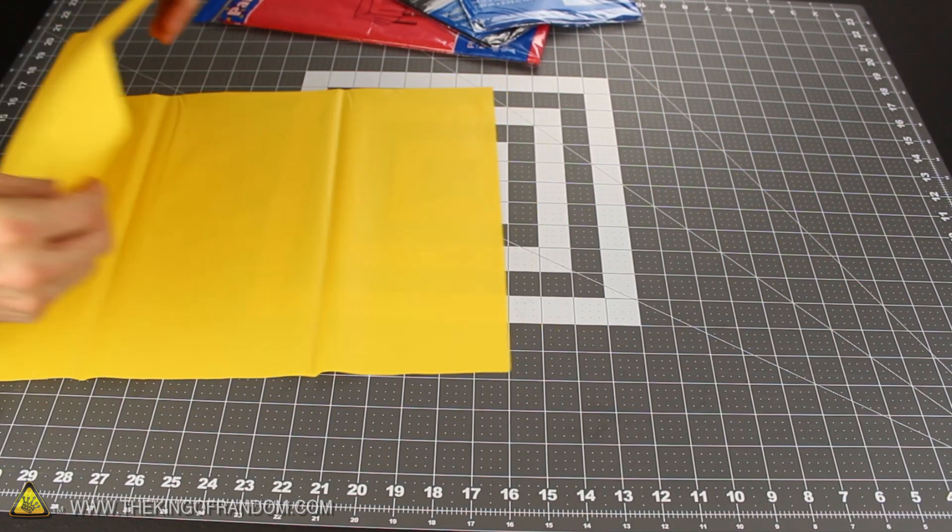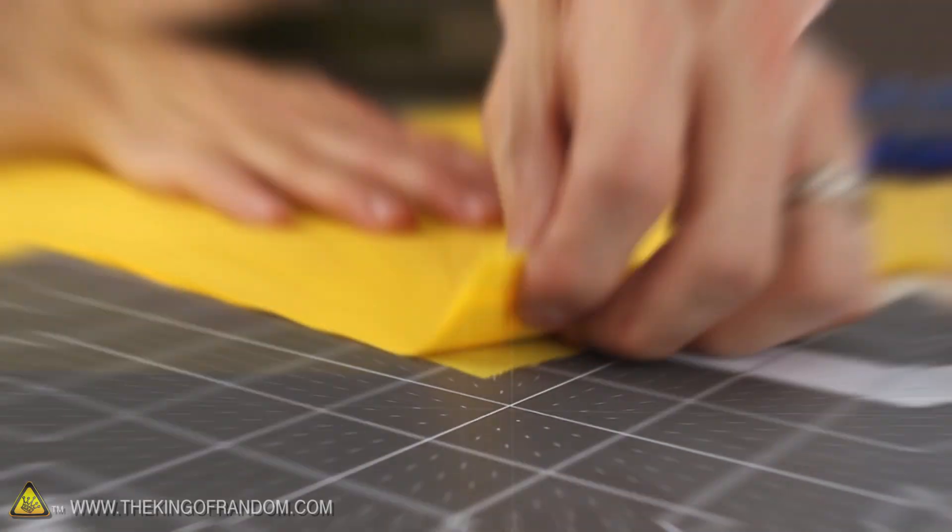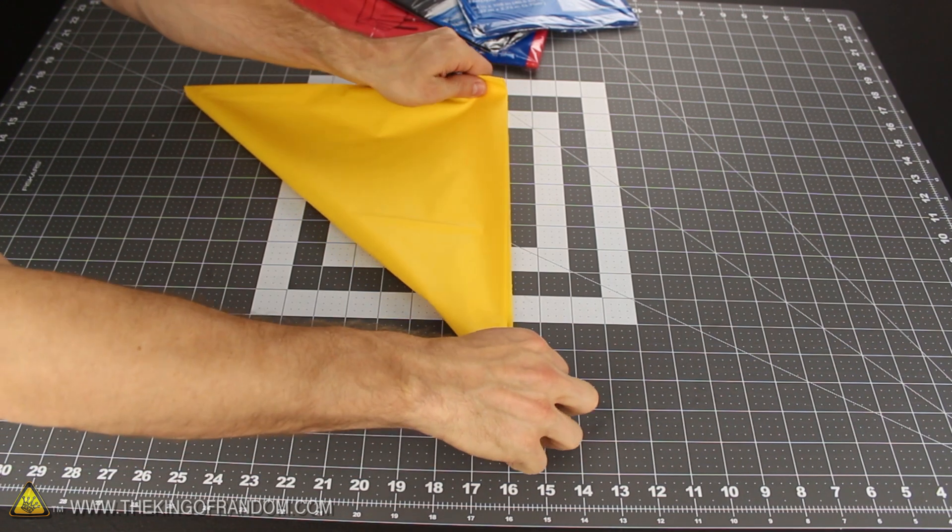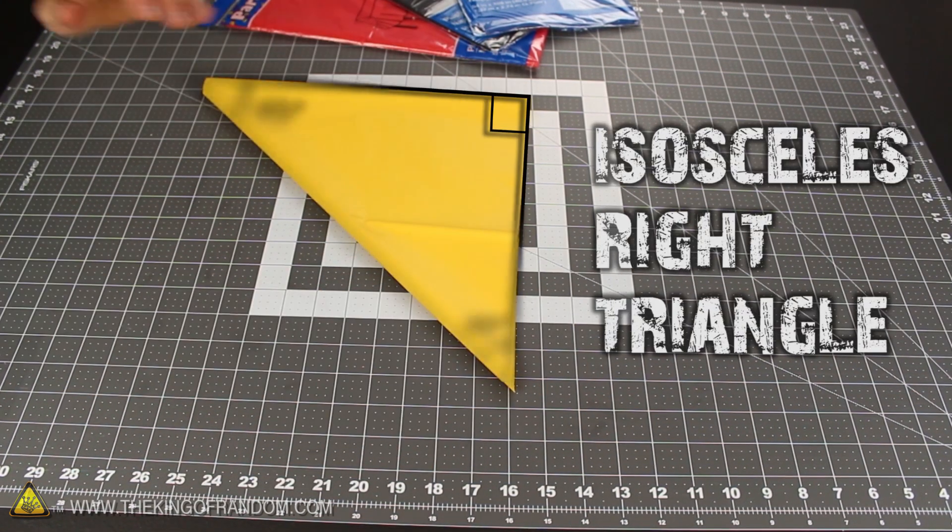Start by folding the rectangle in half to form a square and make sure the bottom right corner has the four loose ends. If it does, then put your pointer finger on the corner to hold it in place and fold it point to point, forming an isosceles right triangle.